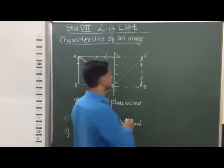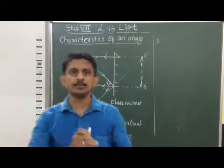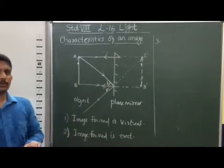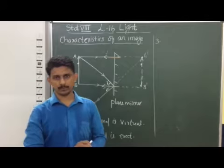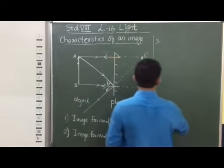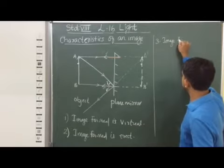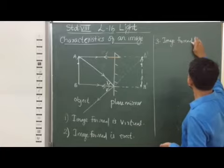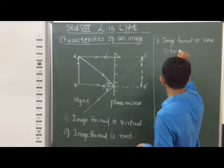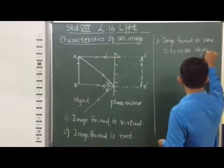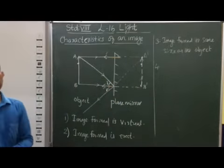Now the third property: suppose you are standing in front of a plane mirror and looking at your image. You can see that the image formed is the same size as the object. So the third property of image formation by a plane mirror is that the image formed is the same size as the object.